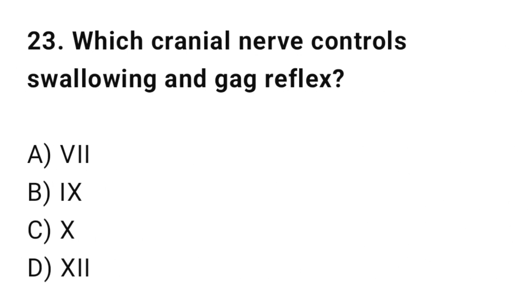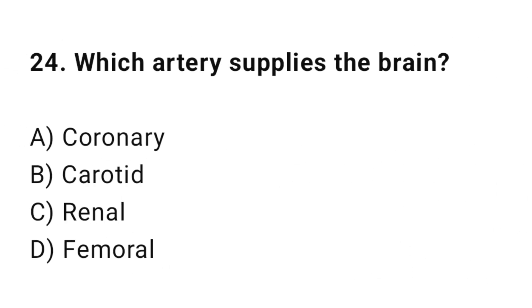Question 23: Which cranial nerve controls swallowing and the gag reflex? The correct option is B: Cranial nerve X (Vagus). Question 24: Which artery supplies the brain? The correct option is B: Carotid.